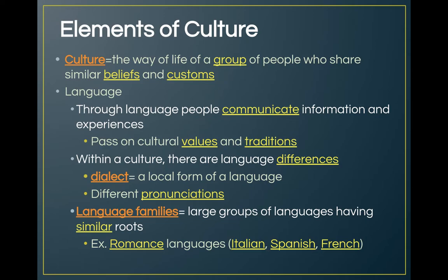Languages are organized into what are called language families — a large group of languages that have really similar roots. For example, romance languages would be like Italian, Spanish, or French, which are all derived from Latin. English and German are called Germanic languages because they're derived from the Germanic peoples.